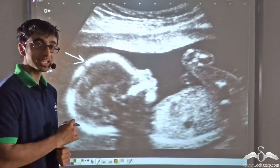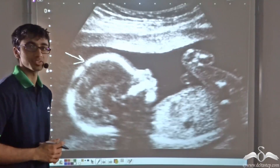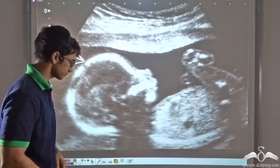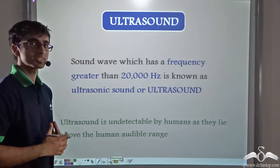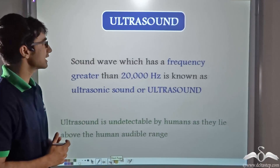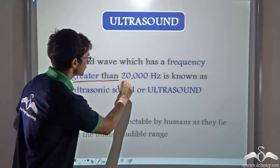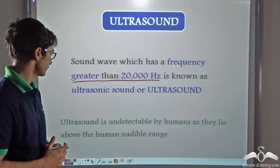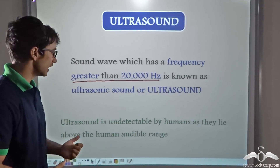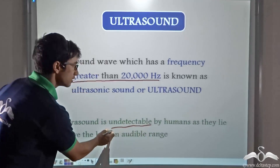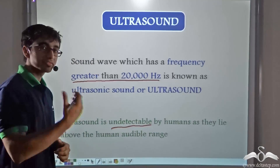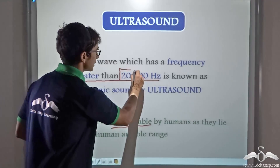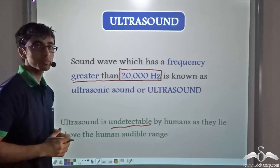The sound waves used to obtain this image are known as ultrasound waves. Let us take a very quick recap. Sound waves which have a frequency greater than 20,000 Hertz are known as ultrasonic sound or ultrasound. Ultrasound is undetectable by human beings as it lies above the human audible range, meaning sounds above 20,000 Hertz cannot be heard by human beings.